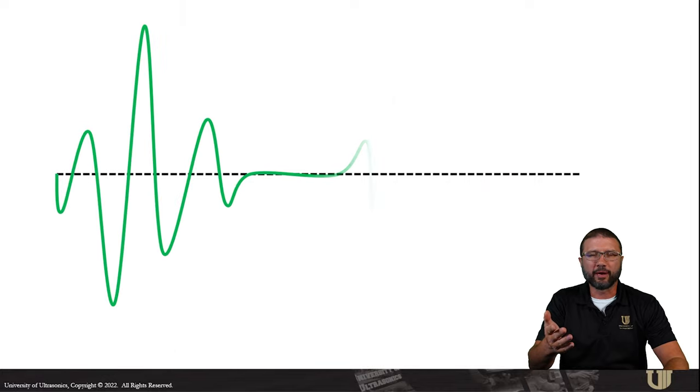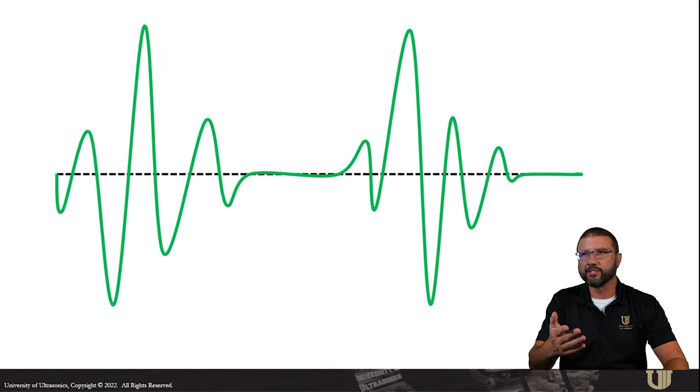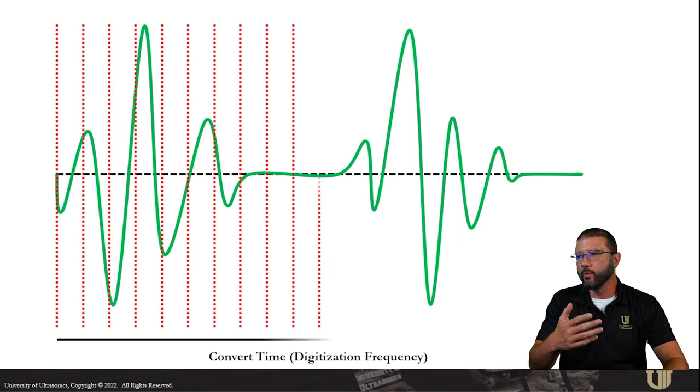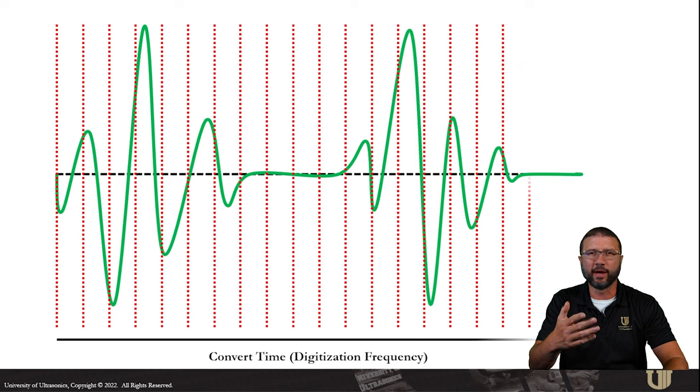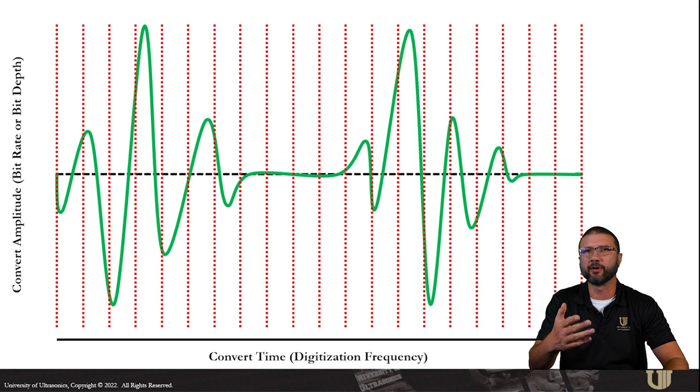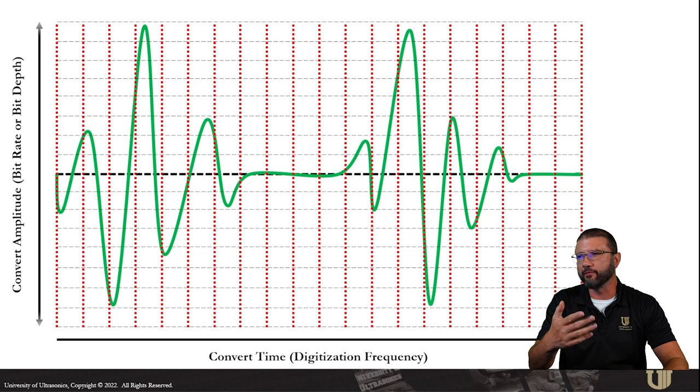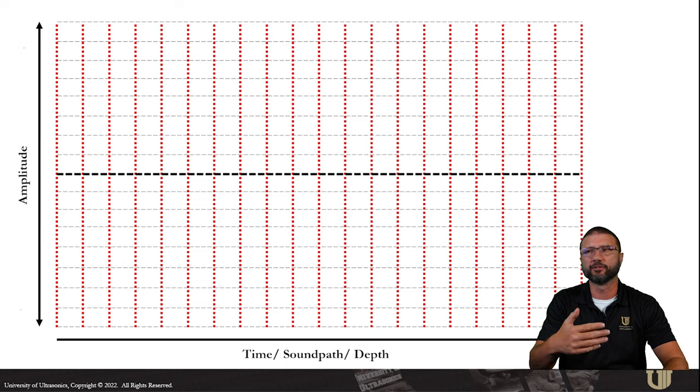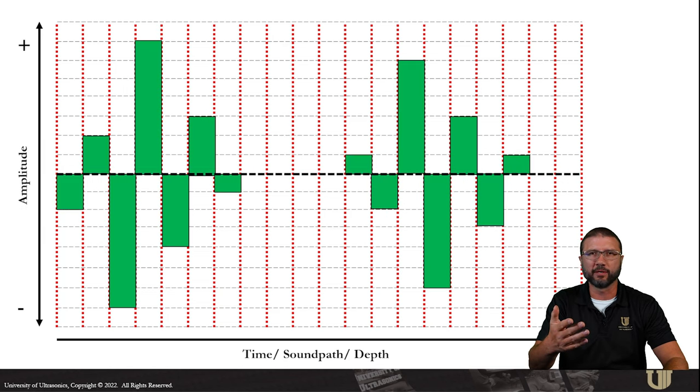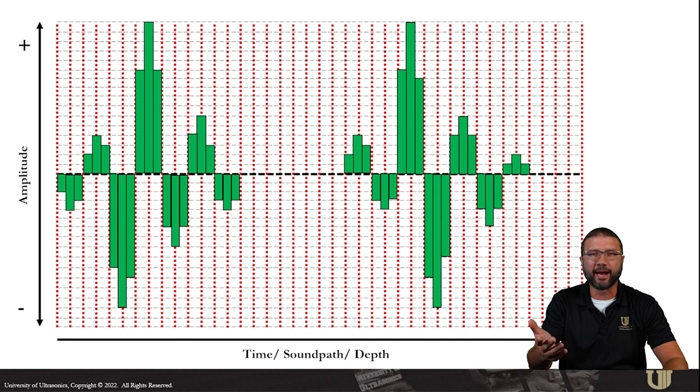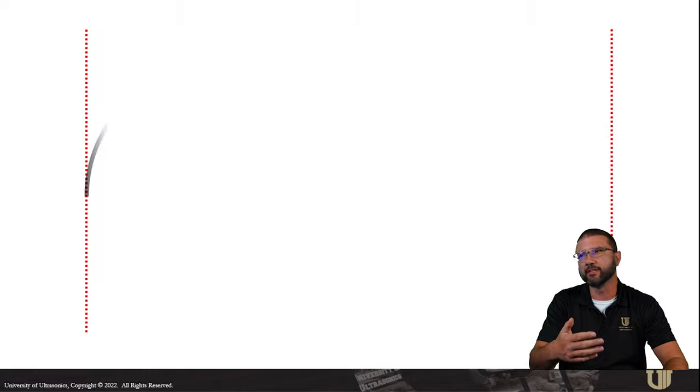To think about going from analog to digital, we start out with an analog A-scan at the receiver. That's how the sound is in its natural form. We convert the time base and the precision that we get there is based on our digitization frequency. We also have to convert the amplitude to digital and the bit rate or bit depth of the instrument is going to be in charge of that. Depending on the settings that we use, we can get an A-scan that has a really low resolution or maybe one that has a really high resolution.